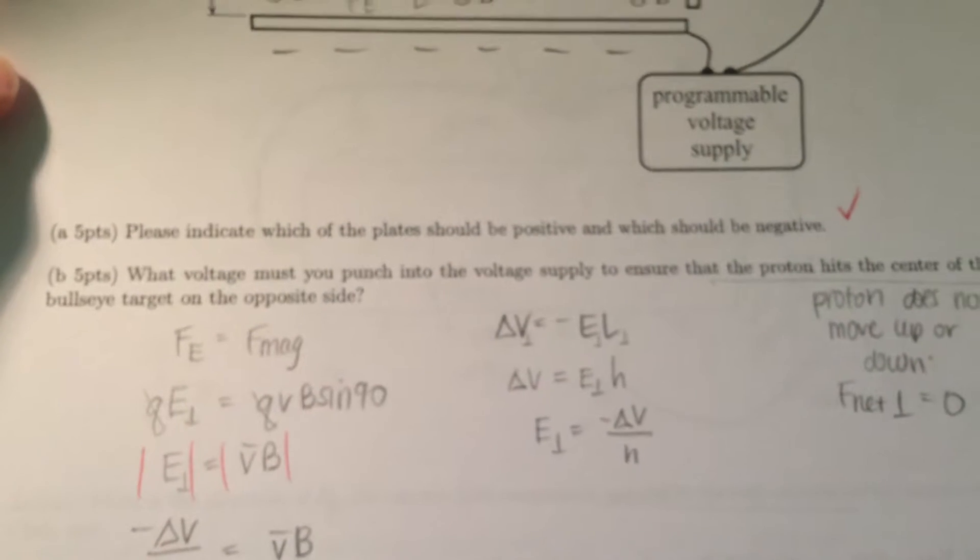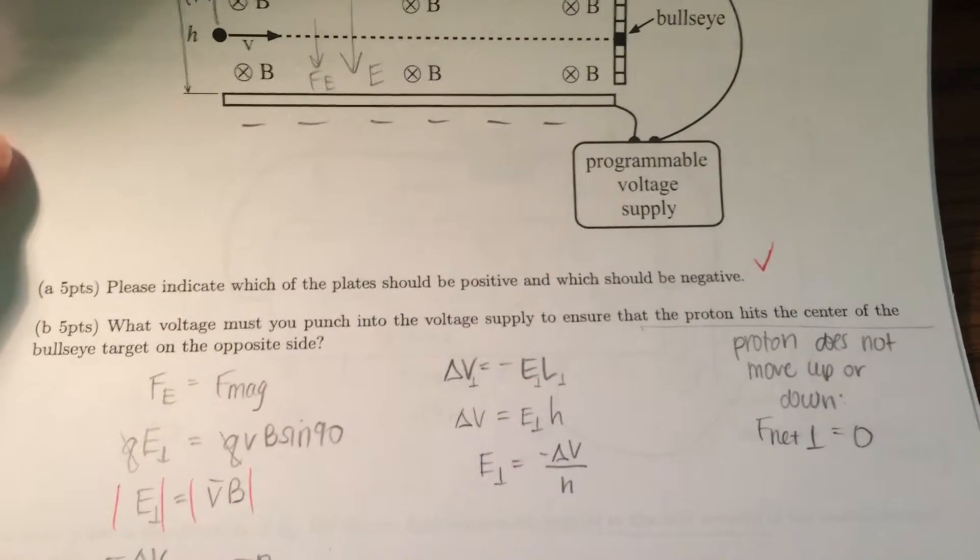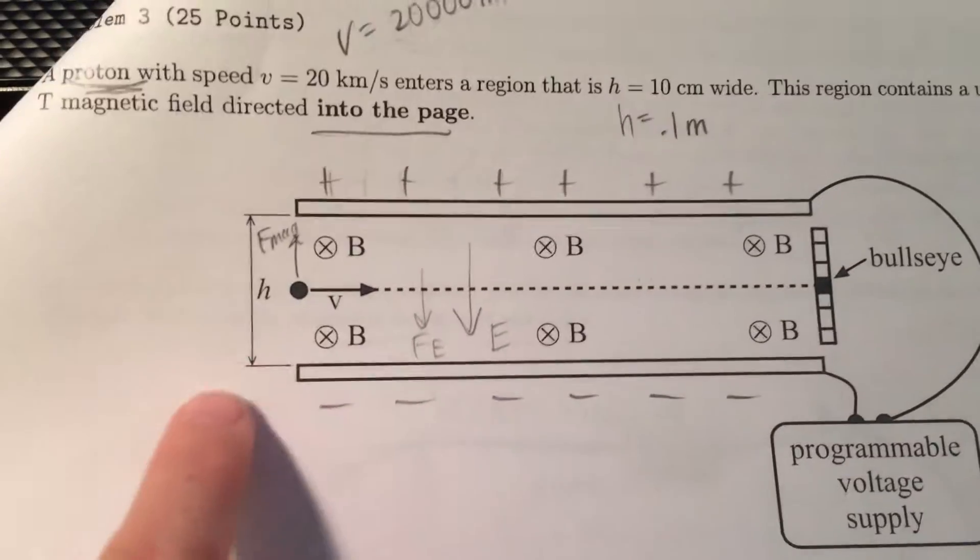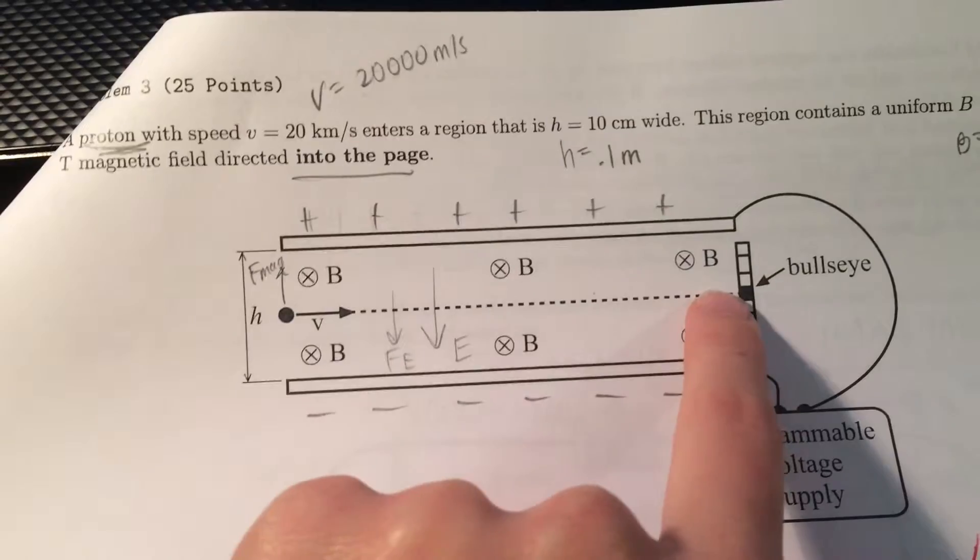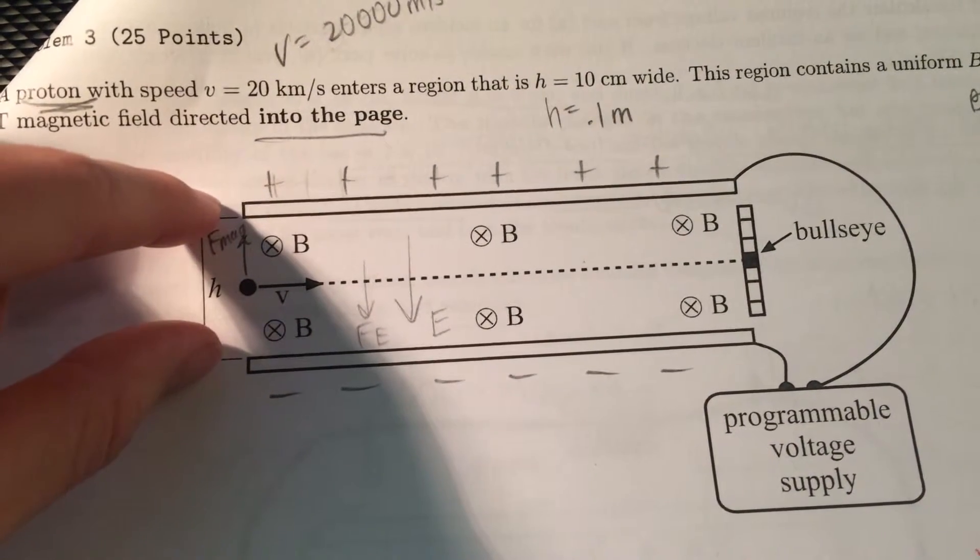The next question is, what voltage must you punch into the voltage supply to ensure that the proton hits the center of the bullseye target on the opposite side? So if it hits the center of the bullseye target, that means it goes straight across without moving up or down, which means the net force inside the plates must equal zero.